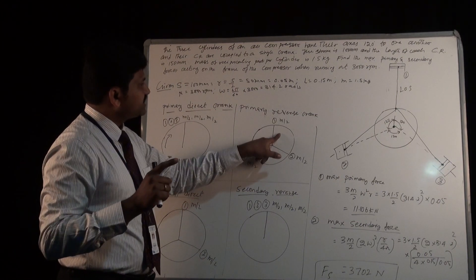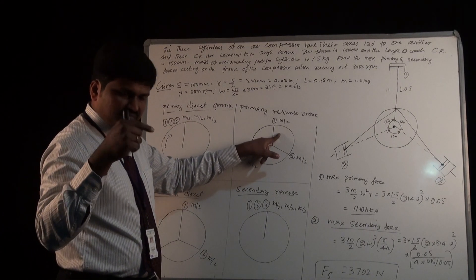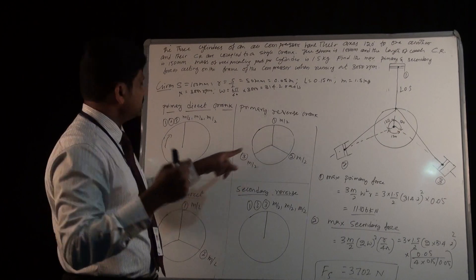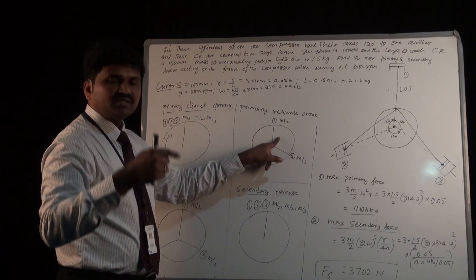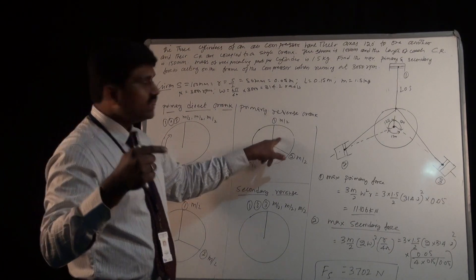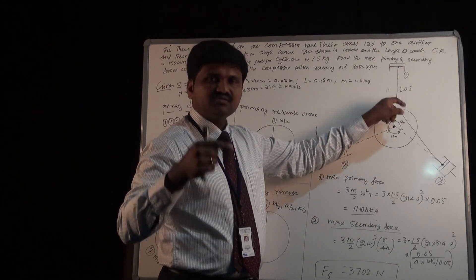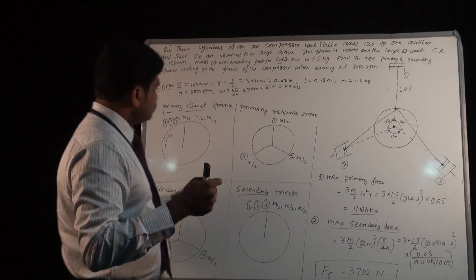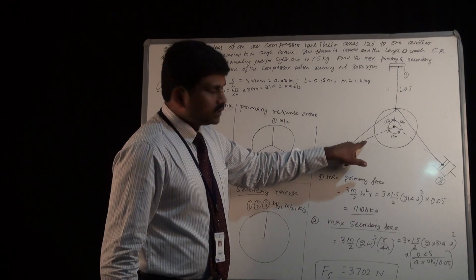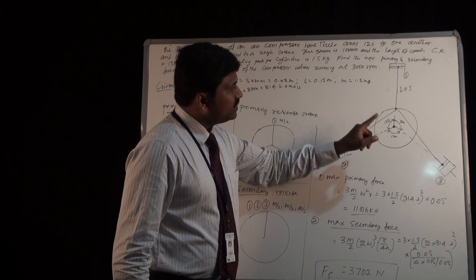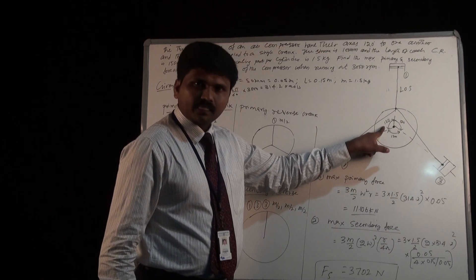For the primary analysis, both the direct crank and reverse crank of cylinder 1 will be at zero degrees, which is vertical. Now come to cylinder 2 — the angular position of the common crank with respect to the line of stroke is 120 degrees. From the line of stroke, rotate the crank in the clockwise direction by the angle theta equal to 120 degrees, and the direct crank of cylinder 2 will come to the same position as cylinder 1's crank.